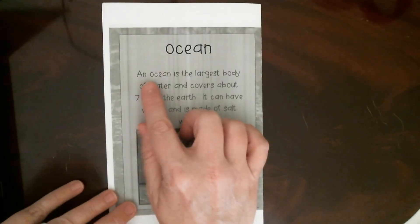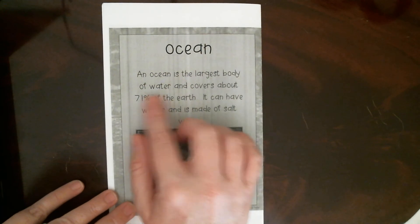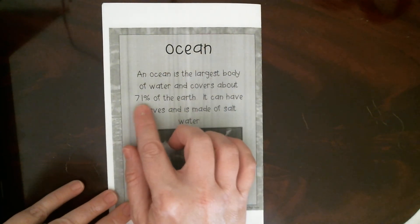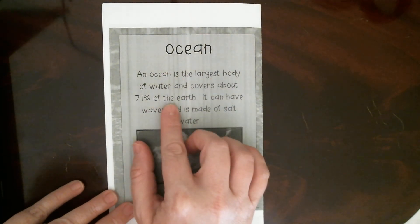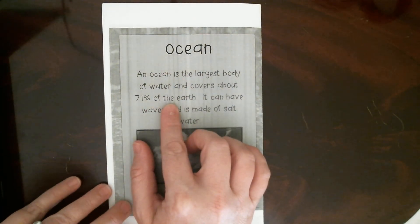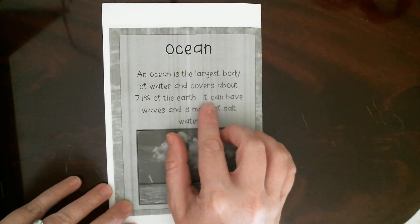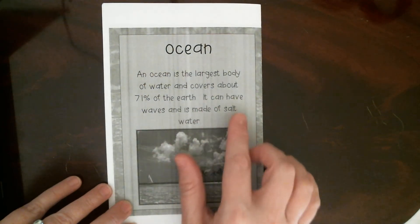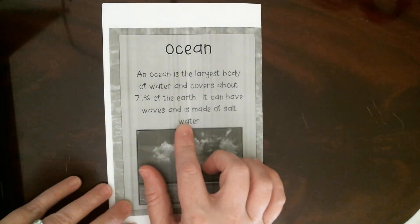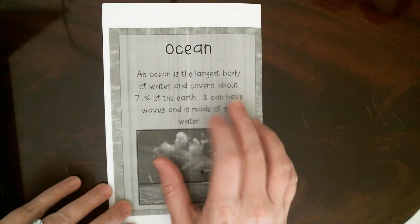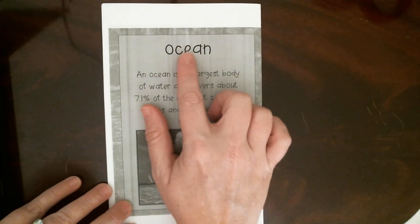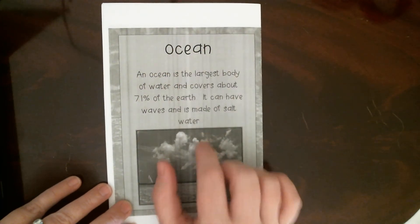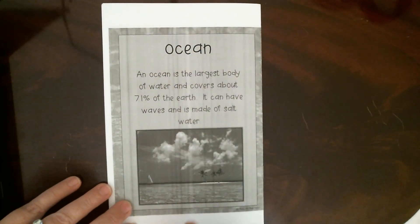An ocean is the largest body of water and covers about 71 percent of the earth — that's almost three-fourths. It can have waves and is made of salt water. The main characteristic that makes an ocean is that it's salt water.